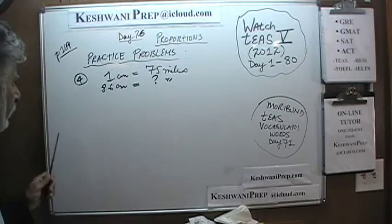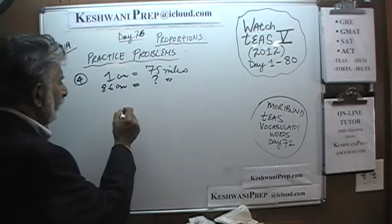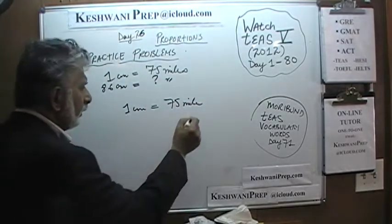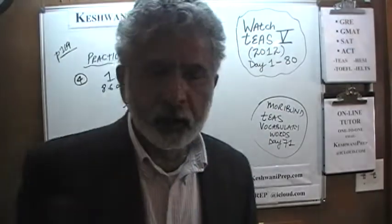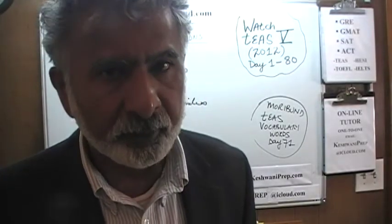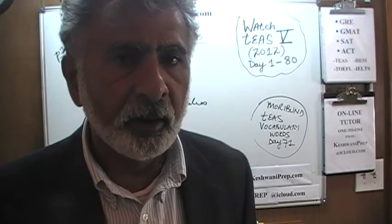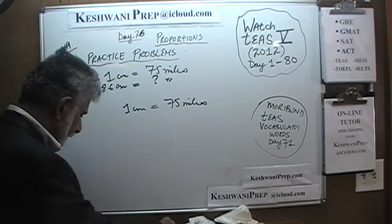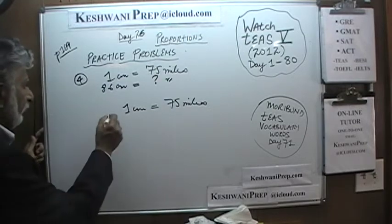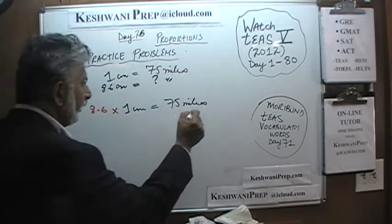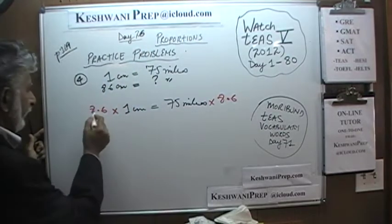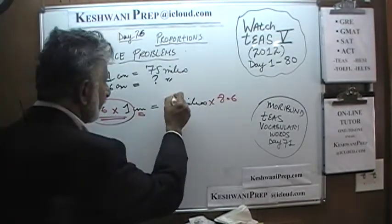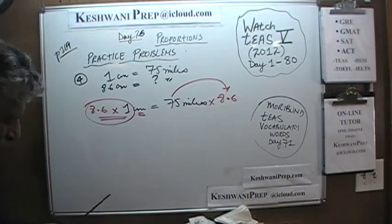Let's take number 4. We are looking for 8.6 cm; we know 1 cm equals 75 miles. We are not interested in knowing how many miles are represented by 1 cm — we are going to find out how many miles are represented by 8.6 cm. Straight forward. Just take that equation and multiply both sides by 8.6 and you are done. 8.6 times 1 is 8.6 obviously. And now we can figure out that 8.6 cm represents 75 times 8.6 miles.